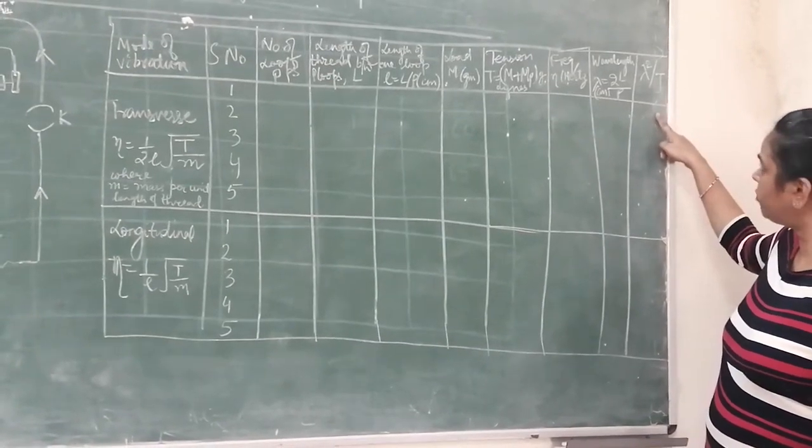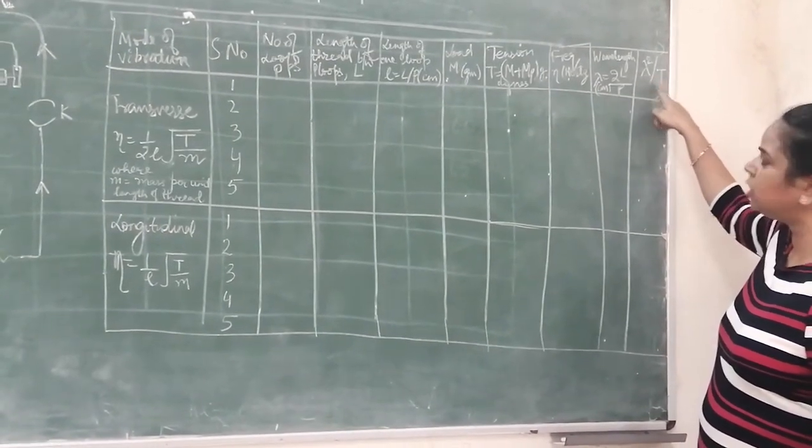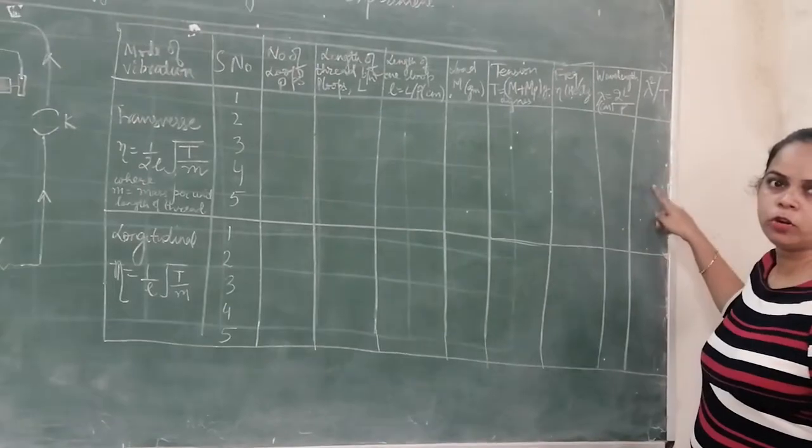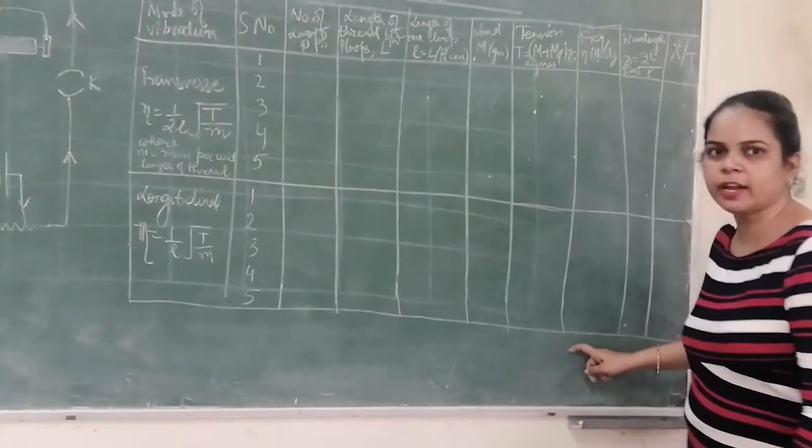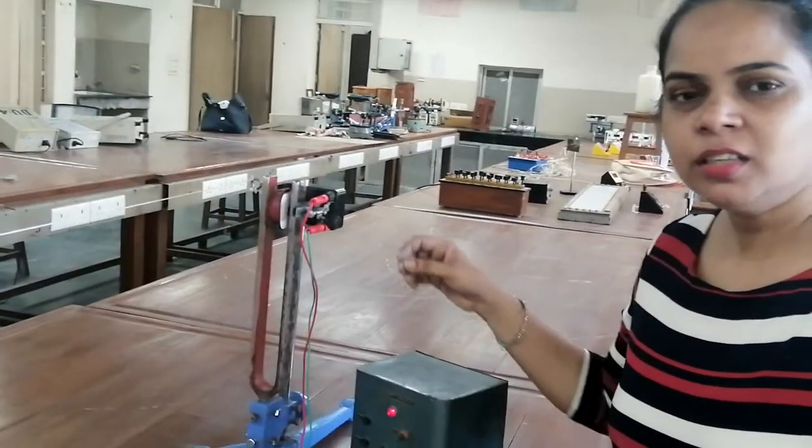We can also calculate the wavelength lambda which is equal to 2L upon capital P. And then we can verify the law, that is lambda square by T, both for transverse as well as for longitudinal.